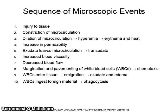Exudate leaves the microcirculation, which is known as transudate. This leads to increased blood viscosity and decreased blood flow. Margination and pavementing of white blood cells occurs, which is known as chemotaxis. White blood cells then enter the tissue, known as emigration, resulting in exudate and edema. White blood cells then ingest foreign material, which is called phagocytosis or cell eating.